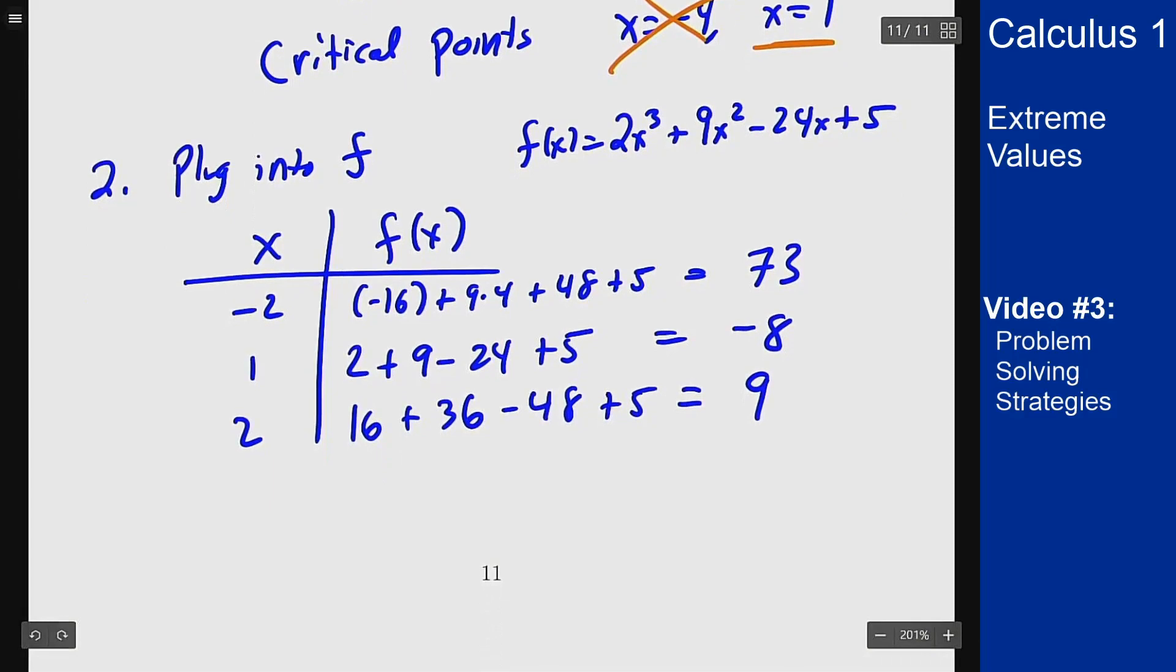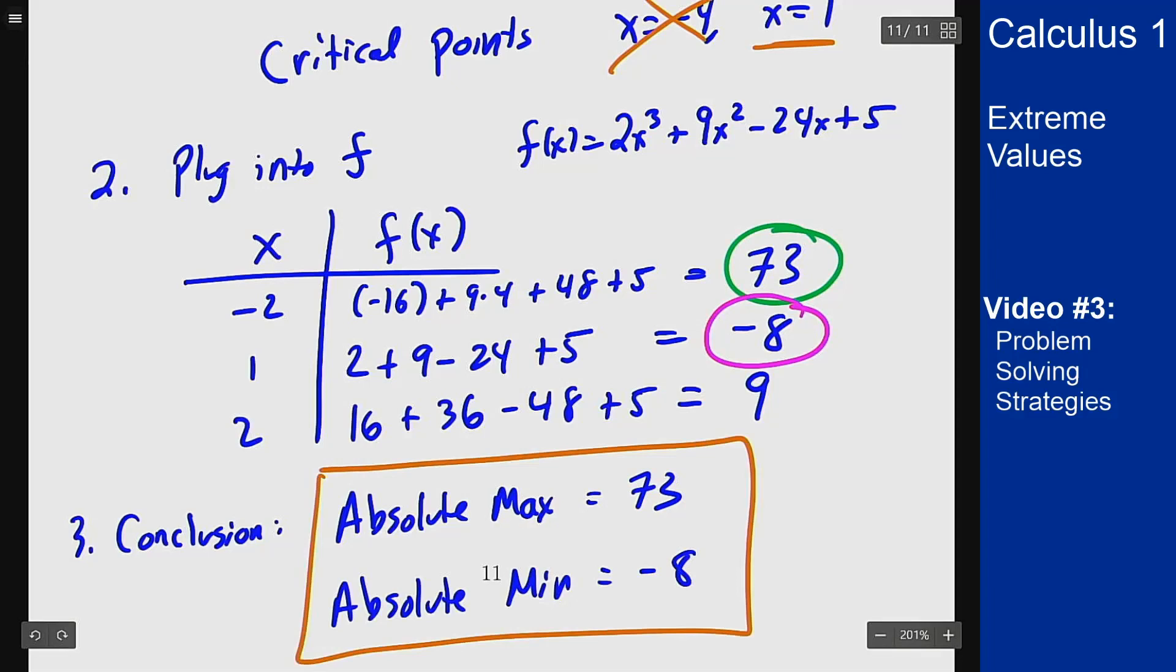So for my conclusion, I get that the absolute maximum value is 73, that's the value obtained at x = -2. And the absolute min is -8 at x = 1. And that's the general process we're using for finding the absolute max and min values of functions, going through finding critical points and then determining at which of those the max and min are attained.